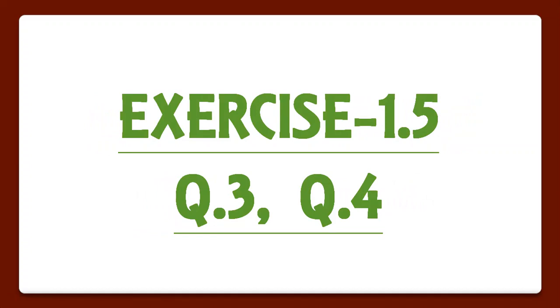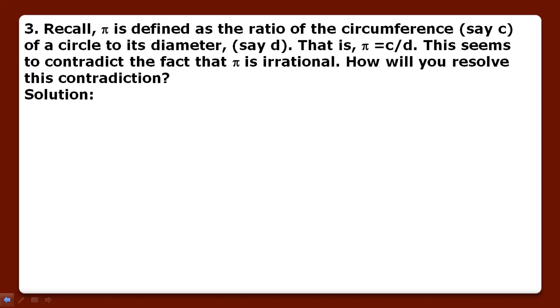Exercise 1.5, question number 3 and 4 will be discussed in this part. So let's start. Recall, π is defined as the ratio of the circumference of a circle to its diameter d, which means π equals c upon d. Let's recall that c, the circumference of a circle, equals 2πr, where r is radius.